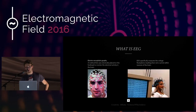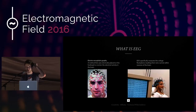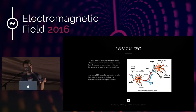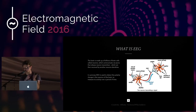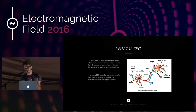EEG is electroencephalography. Basically it's a method used to track brain activity by putting electrodes on your head. Specifically, your brain has loads of neurons in it, and neurons communicate with each other by axons and dendrites. The axon is a communicator between neurons, and the dendrites receive signals. Essentially, neurons communicate by sending a voltage between each other, which causes a polarity shift in the two cells — that is what the sensor picks up and reads.